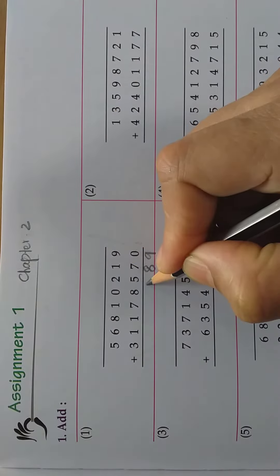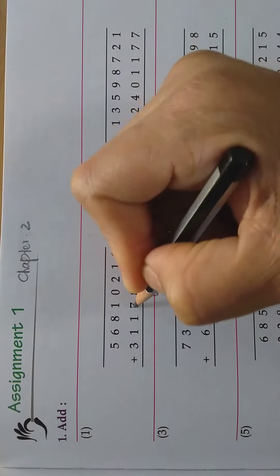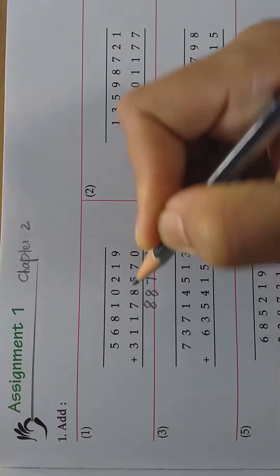2 plus 5, how much? 7. 0 plus 8, 8. 1 plus 7, 8.